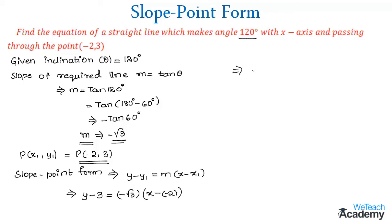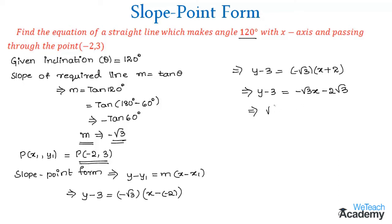Expanding, y minus 3 is equal to minus root 3 into (x plus 2), which gives y minus 3 equal to minus root 3 x minus 2 root 3. Transferring all terms to the left hand side, we get root 3 x plus y minus 3 plus 2 root 3 is equal to 0, which can be written as root 3 x plus y minus (3 minus 2 root 3) is equal to 0.